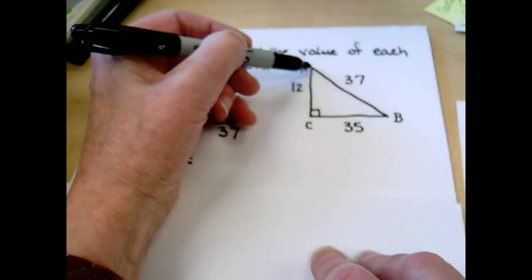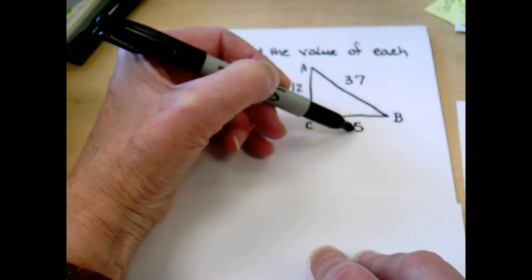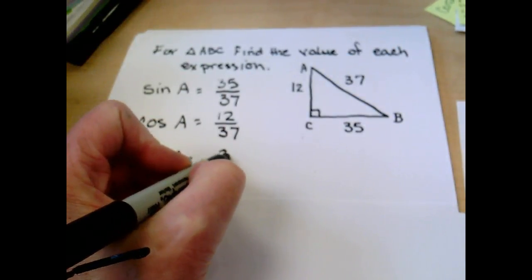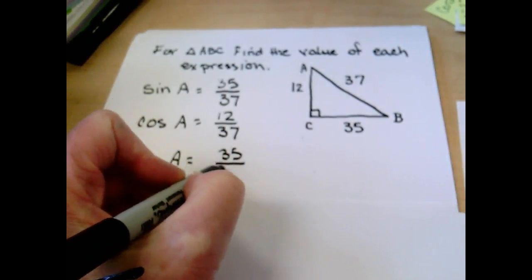Tangent of A. Tangent was opposite over the adjacent, TOA. So my opposite was 35. My adjacent was 12.